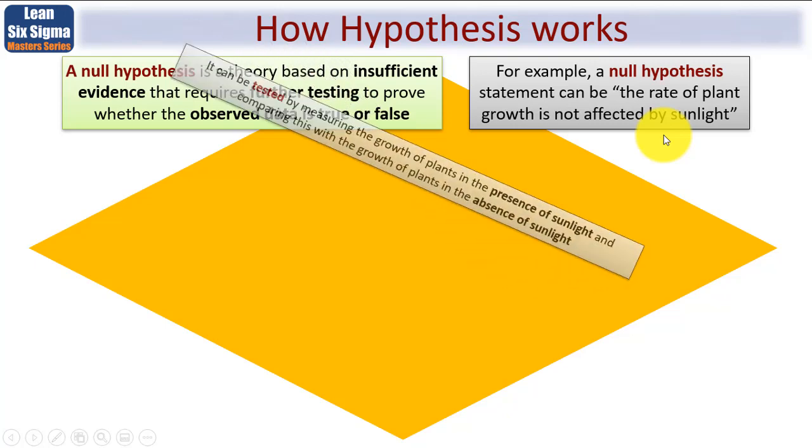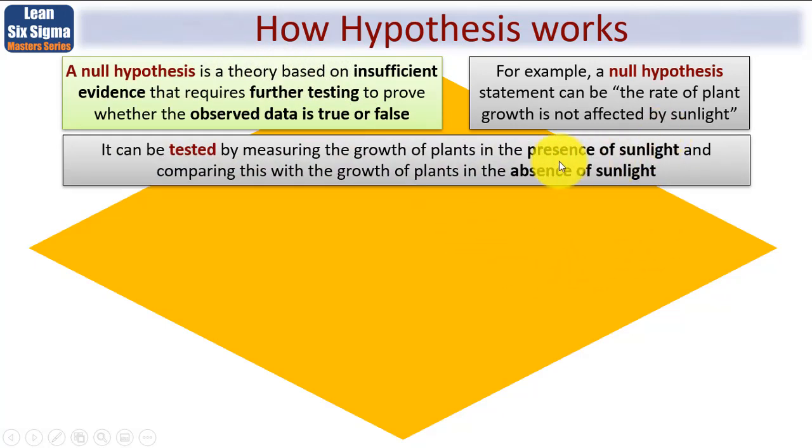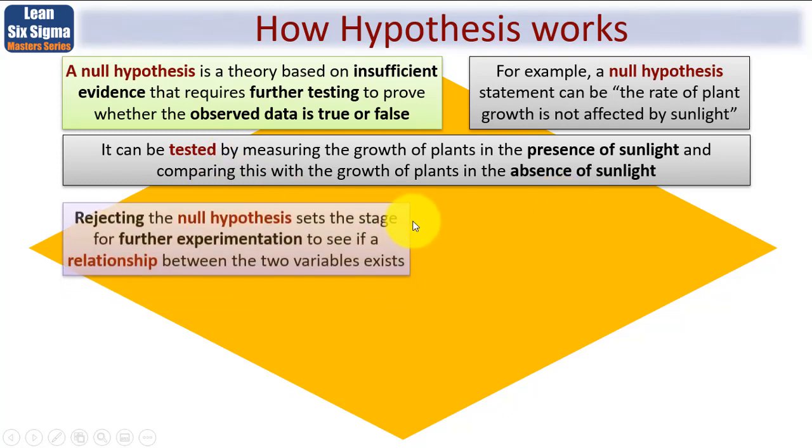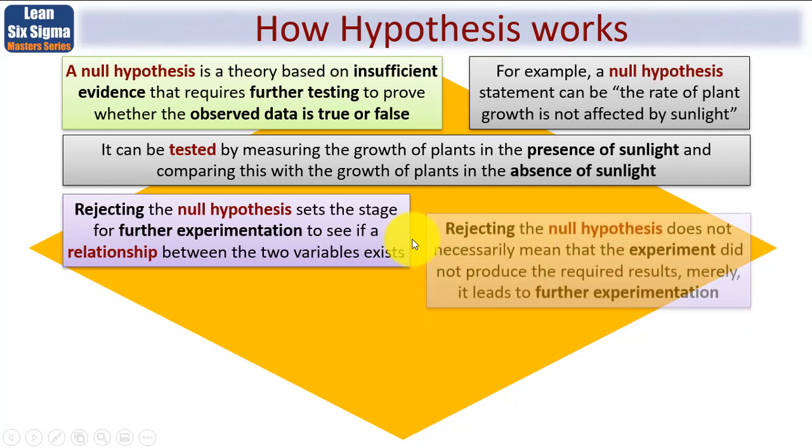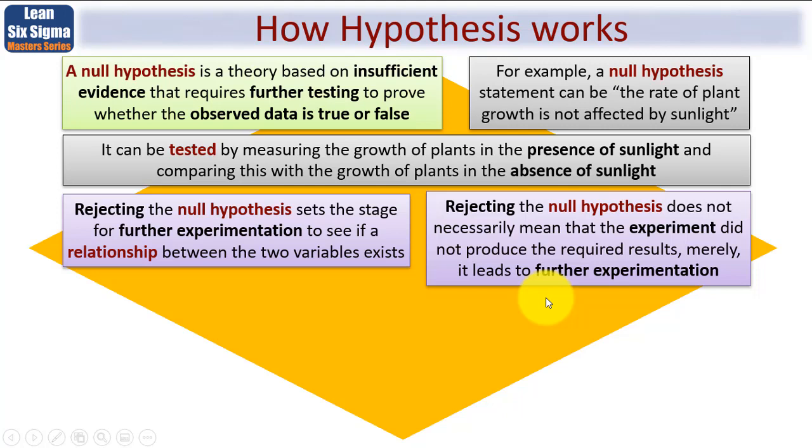It can be tested, of course, by measuring the growth of plants in the presence of sunlight, and then comparing it with the growth of the same plants, or same species at least, in the absence of sunlight, and seeing whether the rate of growth is different. That's what we mean by tested. So rejecting the null hypothesis sets the stage for further experimentation, to see if a relationship between the two variables exists. In this case, plant growth and sunlight. Rejecting the null hypothesis does not necessarily mean that the experiment did not produce the required results, but merely it would lead to further experimentation.